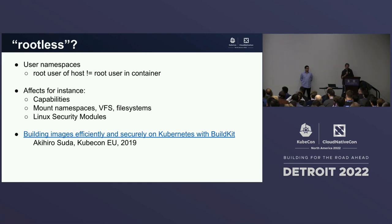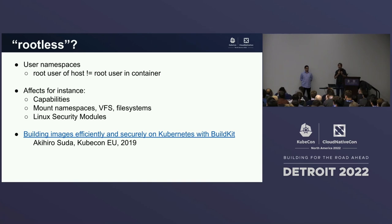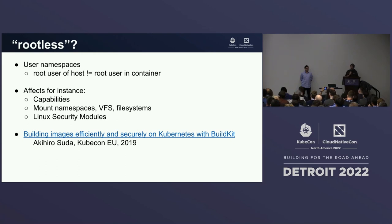What do we mean by rootless builds? It's builds where the main daemon inside Kubernetes is running as non-root, as a normal user. However, we also need to be root to run some commands. This is where user namespaces come into play — a user namespace is a way to simulate a root user, but you're not root on the host. You're root in this limited namespace with limited capabilities. User namespaces are very powerful and they interact with many low-level kernel implementations like capabilities, mounts, or security modules.